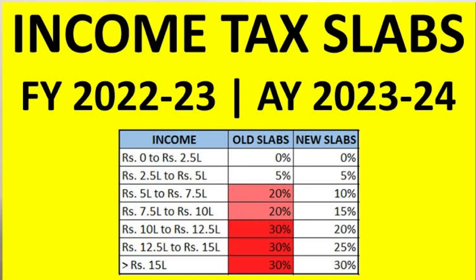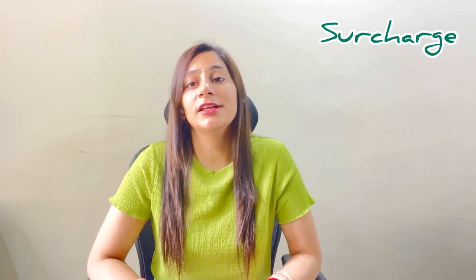After calculating tax according to slab rates, a surcharge is added if a person's income exceeds 50 lakhs or 1 crore. After calculating the base tax and surcharge, a health and education cess of 4% of the tax amount is added. This gives us the total tax liability. If TDS or advance tax has already been paid, that is deducted from the total tax to arrive at the final tax payable.